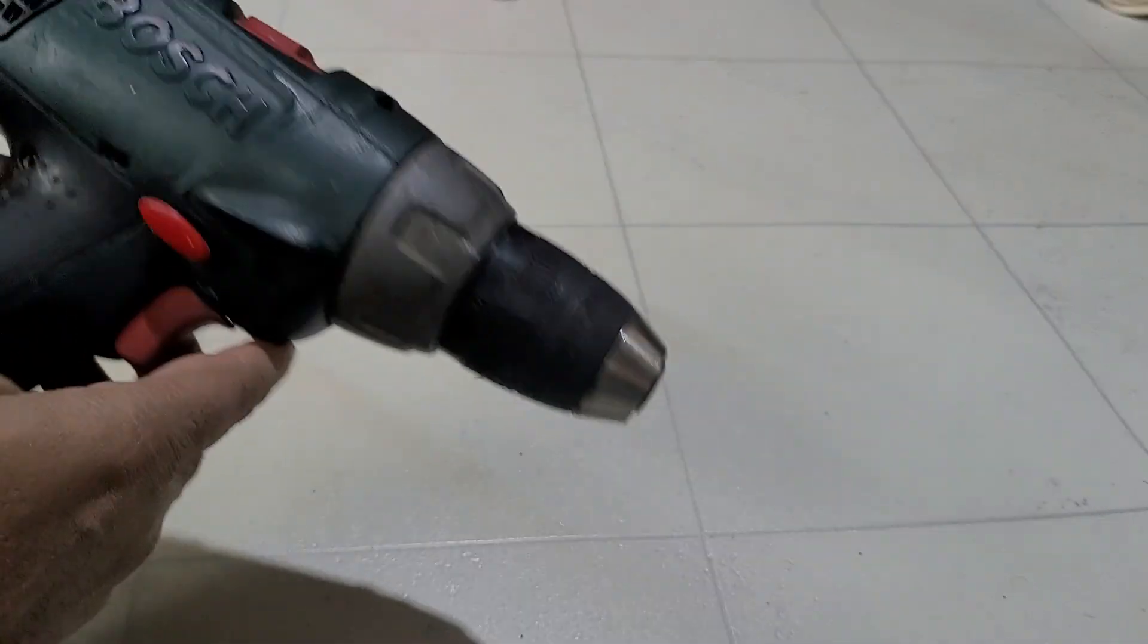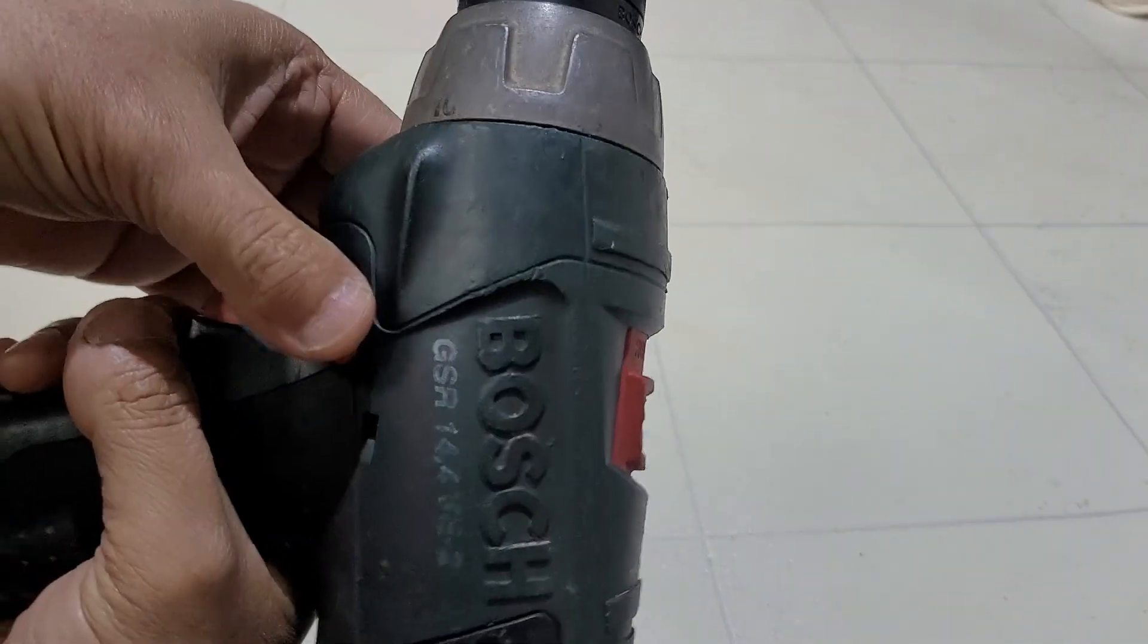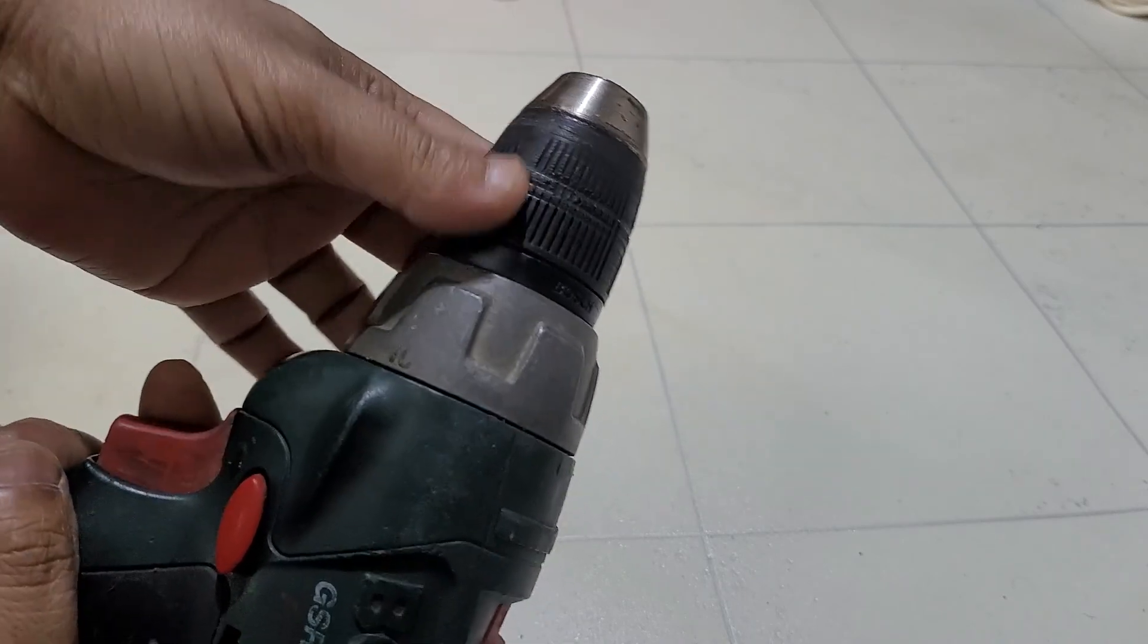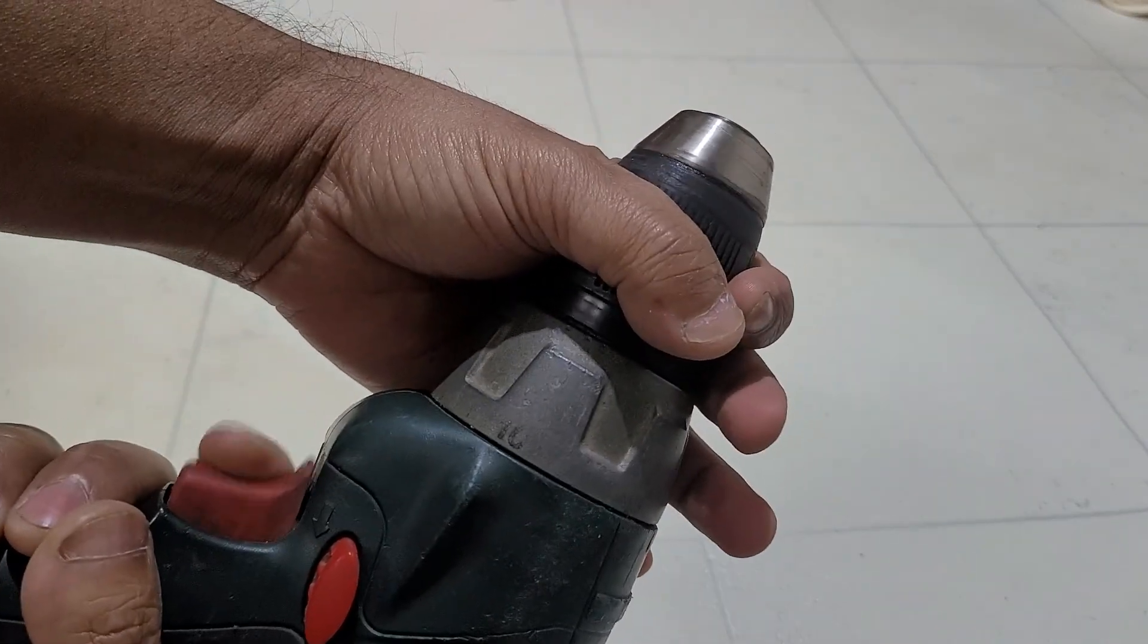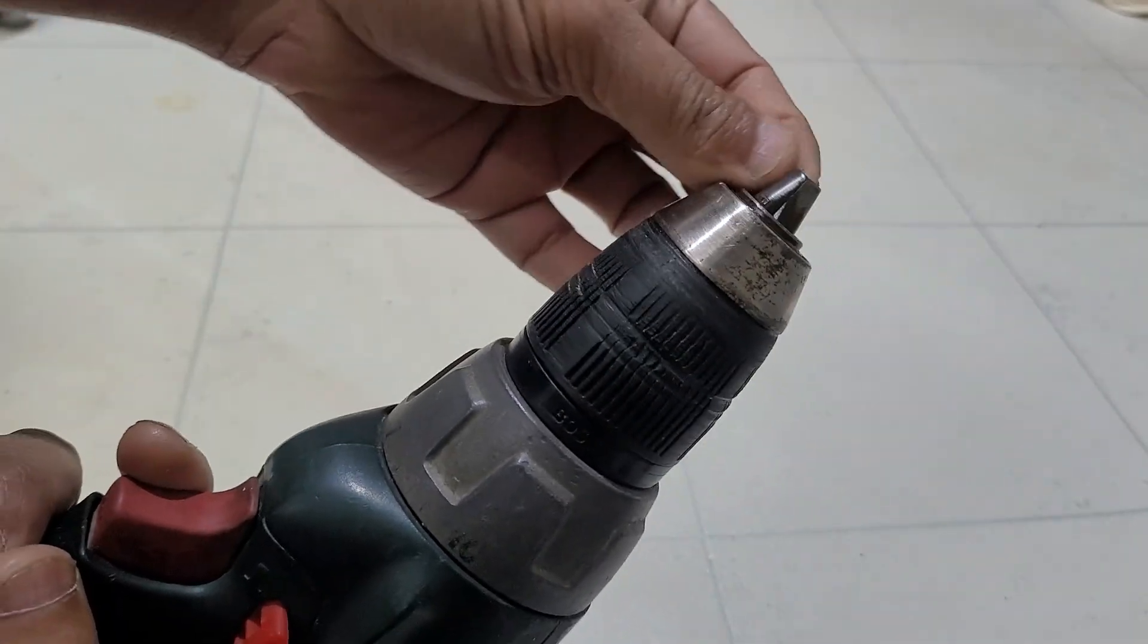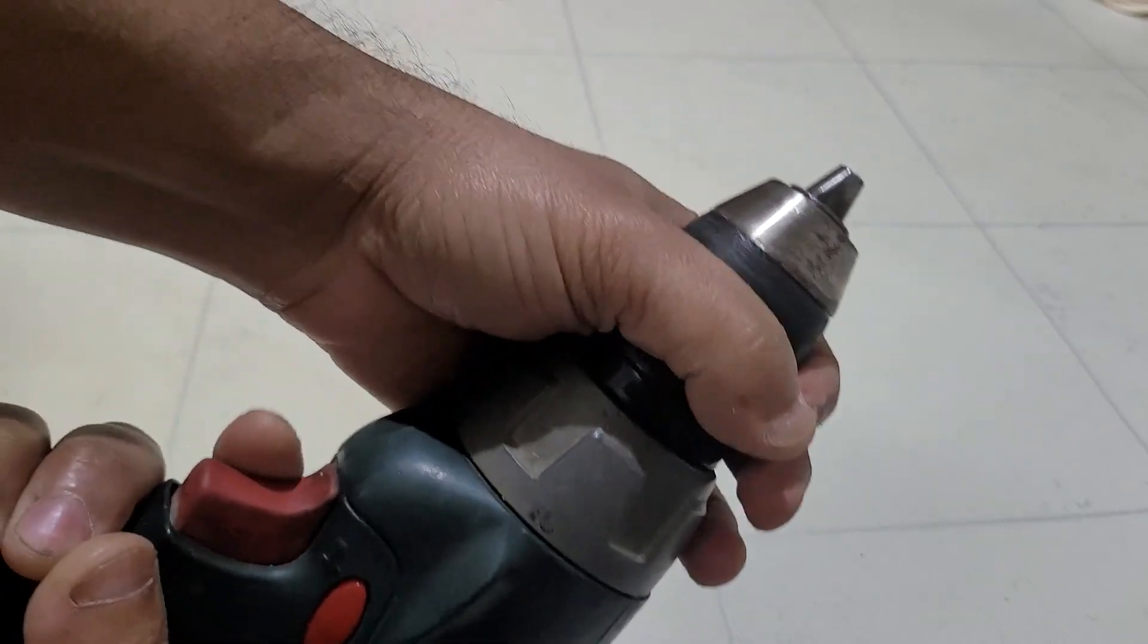The twist mechanism - what you do is put the battery in and set it to forward, then hold it and press. The jaws come out. When you put it in reverse, hold the jaw.